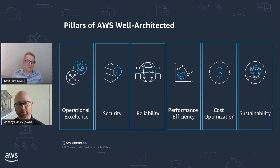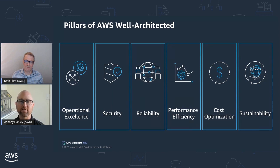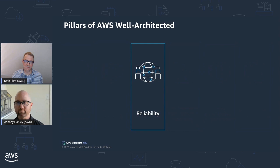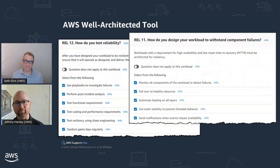There are six pillars in AWS Well-Architected: operational excellence, security, reliability, performance efficiency, cost optimization, and the new pillar that's been added — sustainability. Today we're going to focus on reliability.